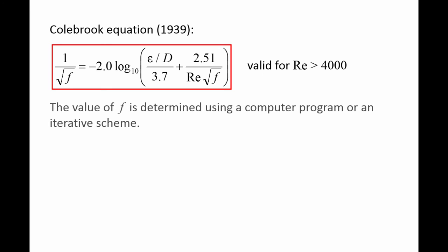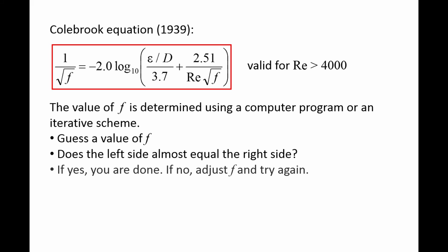However, computers can find f quite easily using a root-finding algorithm if the relative roughness and Reynolds number are known. Alternatively, if you don't have access to a computer, you can use an iterative scheme to find f through a hand calculation. First you guess the value of f, then check if the left side of the equation equals the right side of the equation. If the two sides of the equation are almost equal, you are done. If the two sides of the equation are very different though, adjust the value of f and try again.